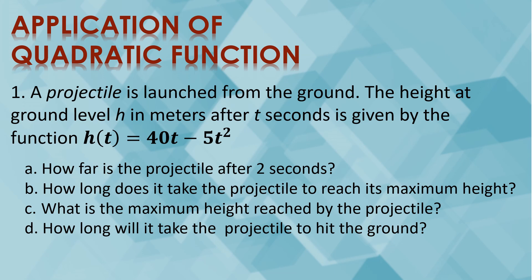One of the applications of quadratic functions is projectile motion in physics. Let us consider this problem: a projectile is launched from the ground. The height at ground level is represented by h of t in meters after t seconds. h of t is equal to 40t minus 5t squared represents the path taken by the projectile. We need to solve: how far is the projectile after 2 seconds? How long does it take to reach its maximum height? What is the maximum height? And how many seconds does it take to hit the ground?